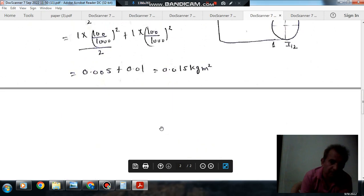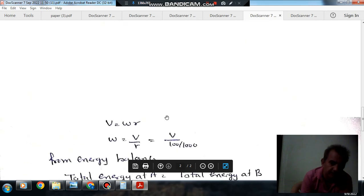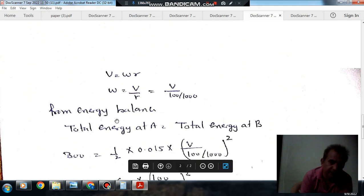Now from energy balance, we have 300 joule potential energy is equal to kinetic energy.